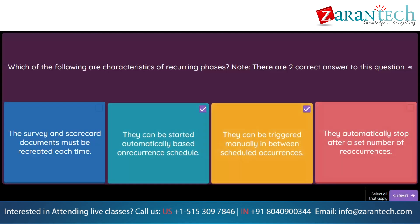Question. You configure a template to appear for the region of North America, as well as any countries that reside within it. How is the visibility condition created? Option 1: Create a field match for region is equal to North America and apply the 'any of' operator. Option 2: Create a field match for region and apply IS equal to operator for North America. Option 3: Create a field match for region is equal to North America and apply the 'all of' operator. Option 4: Create a field match for region and choose operator IS child of for North America.